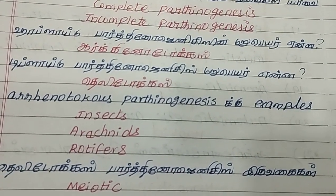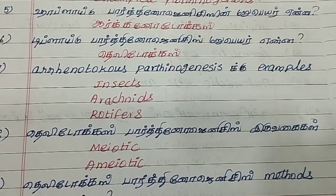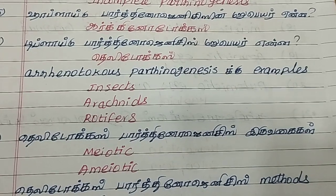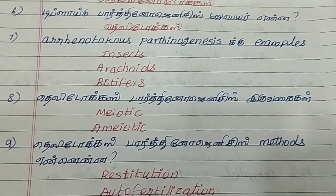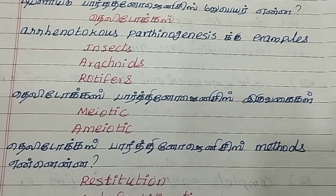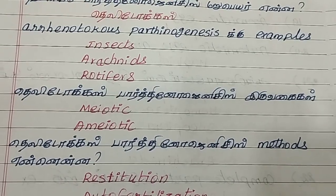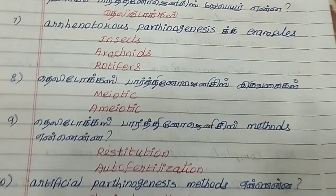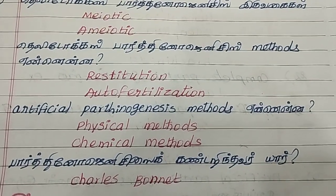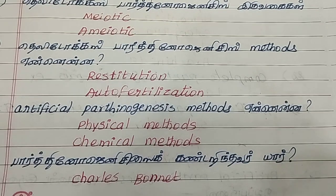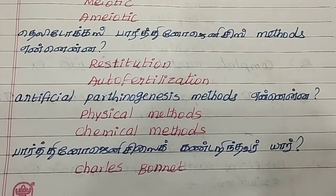Arrhenotochus pathogenesis examples: Insects, arachnids, and rotifers. Thelytochus pathogenesis methods: restitution and autofertilization.